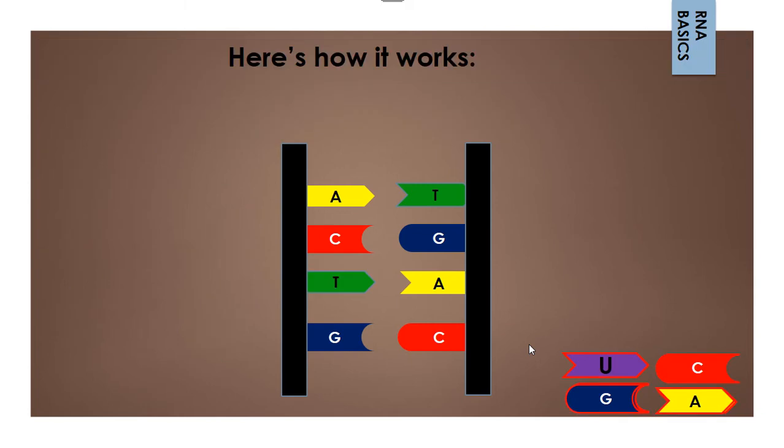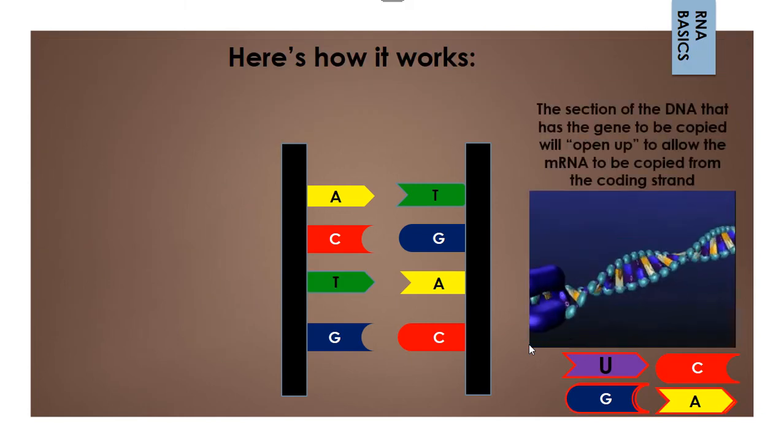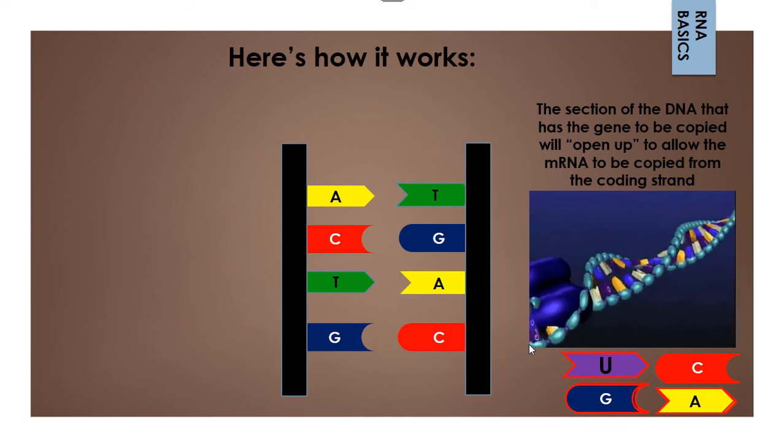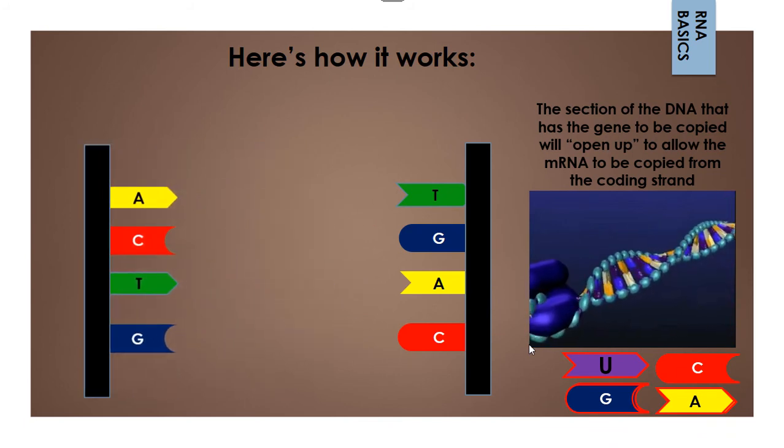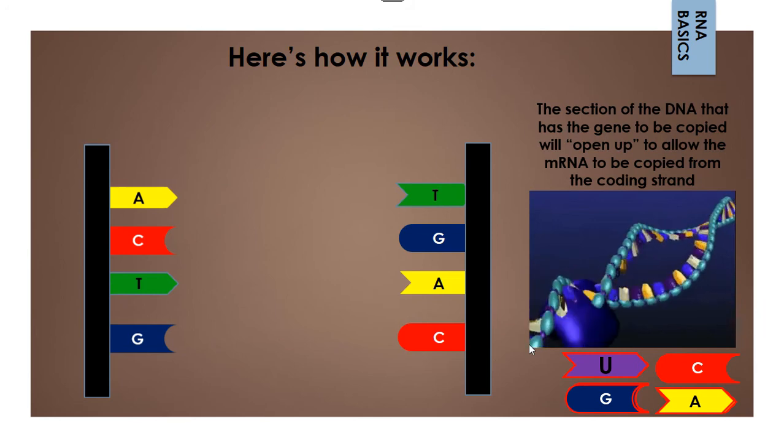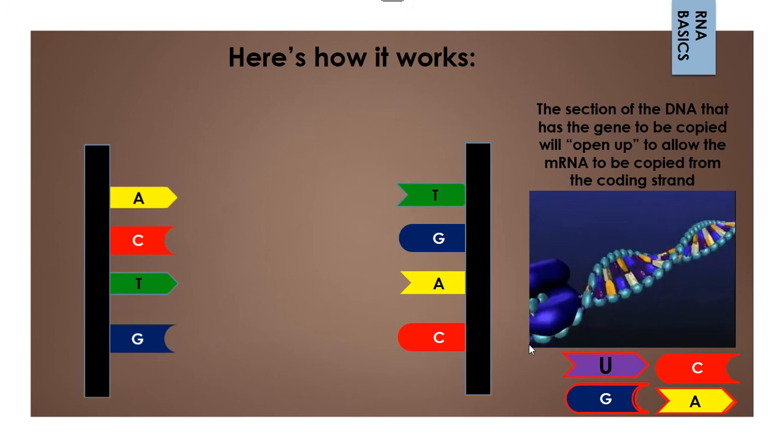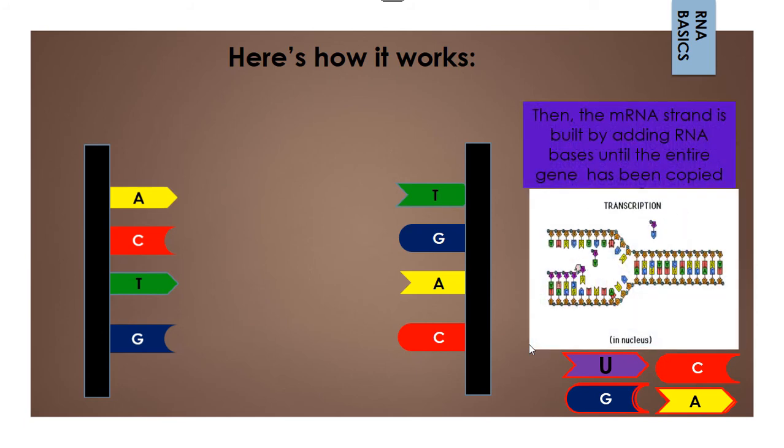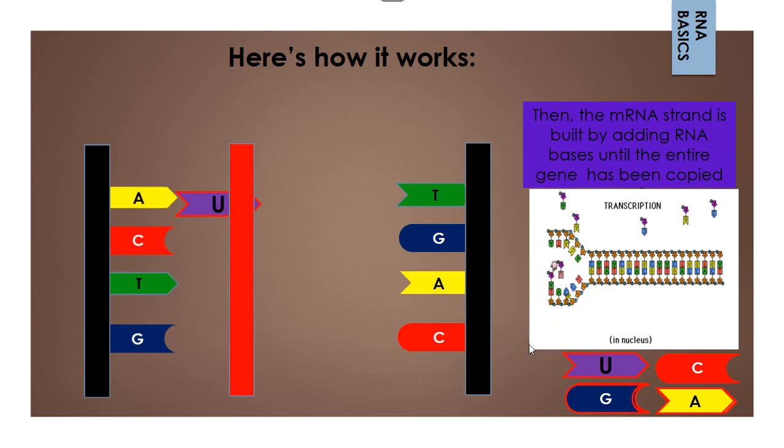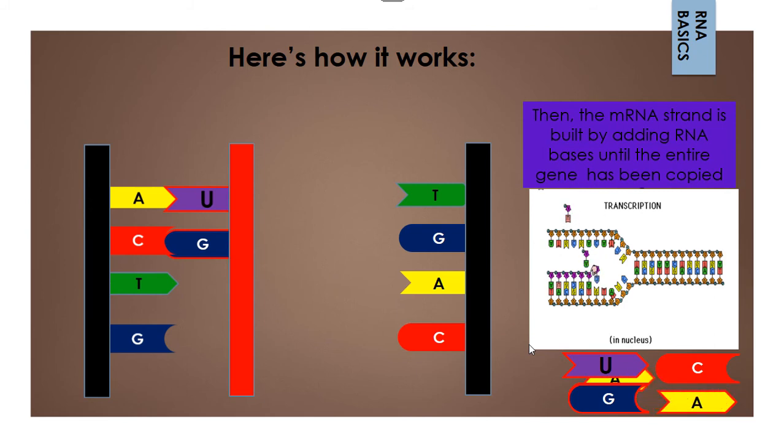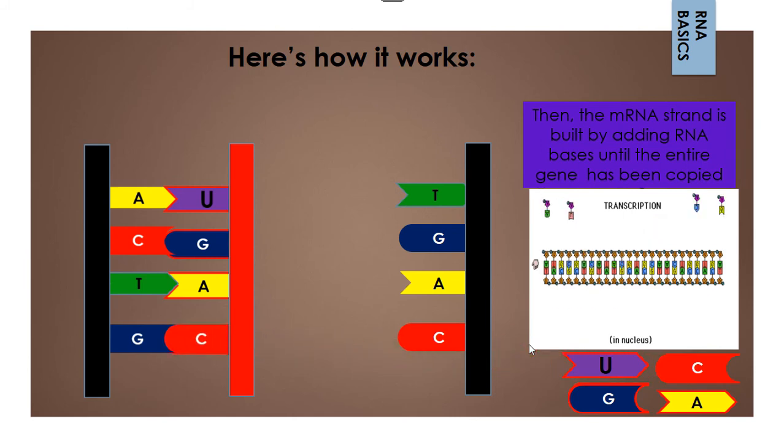So here's what happens. When it comes time to make a gene, the DNA unzips in the spot that the mRNA needs to be copied from, the gene that is being copied. And then once that unzips, then the process of transcription happens. And that's when you start to match up the RNA bases with the DNA bases on what's called the coding strand. And that's the one of the two strands that actually has the code that needs to be copied.